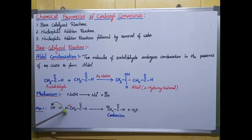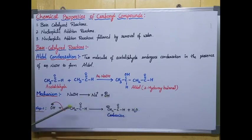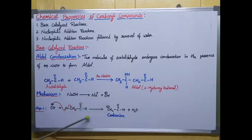When OH⁻ abstracts the proton, H₂O is liberated. As the bond shifts, the hydrogen carries a positive charge and the CH₂ gets a negative charge. So in this first step a carbanion is generated.